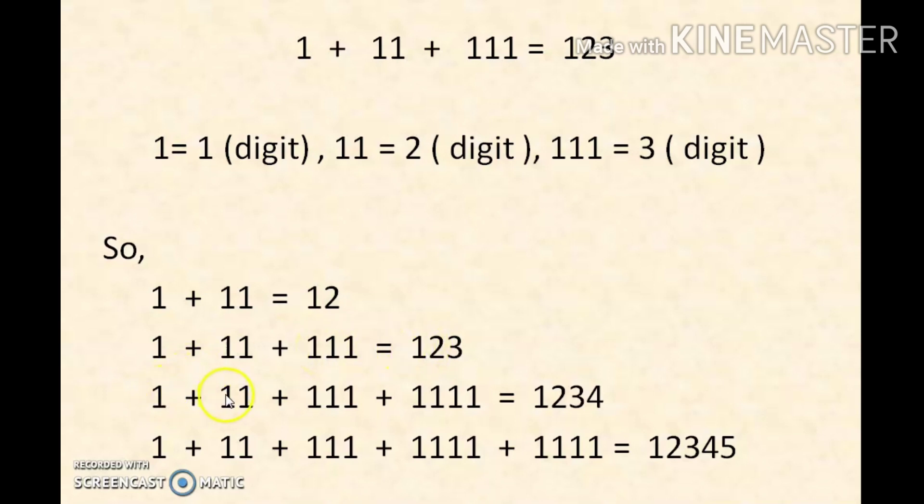Third, 1 one plus 2 ones plus 3 ones plus 4 ones, so we get 1, 2, 3, 4, that is 1234. Last, 1 one, 2 ones, plus 3 ones, plus 4 ones, plus 5 ones, so we get 1, 2, 3, 4, 5, that is 12345.